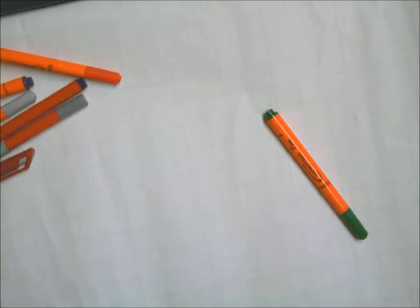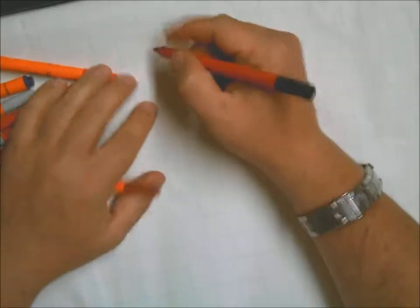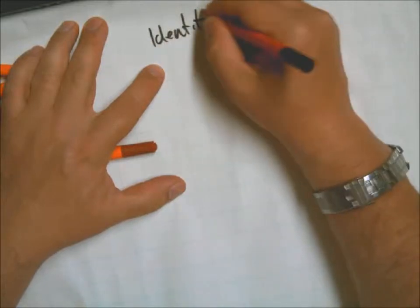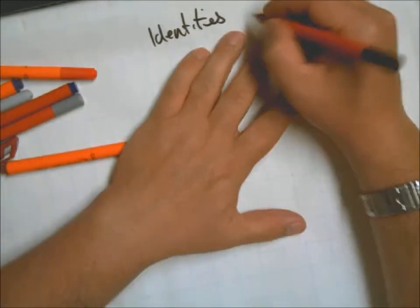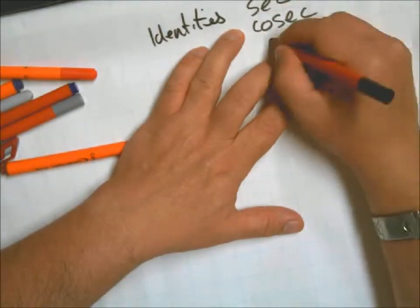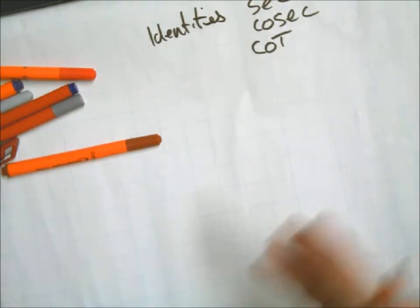Right, hello. This is going to be our starter as we look at using these new trig identities to solve identities. We're looking at identities and the new trig ones: we're going to be using sec, cosec, and cot.